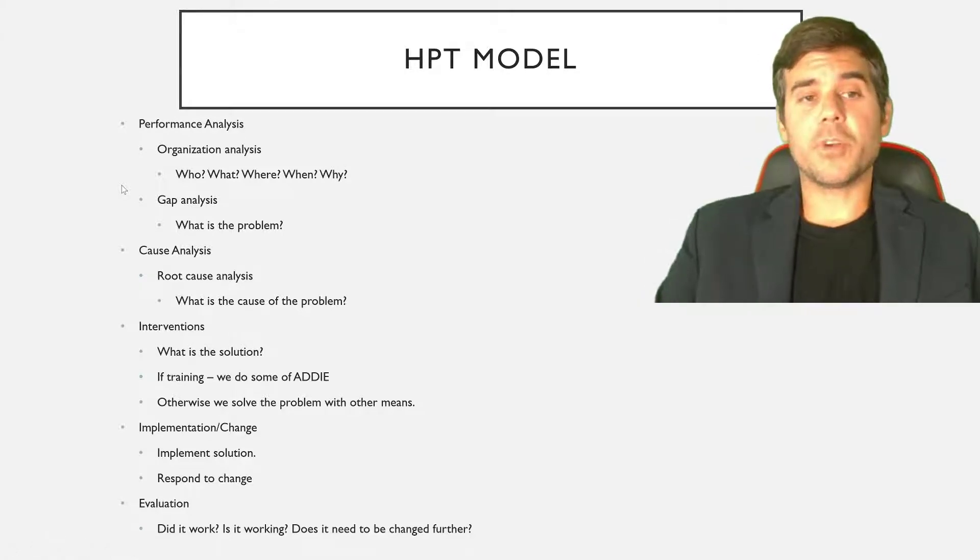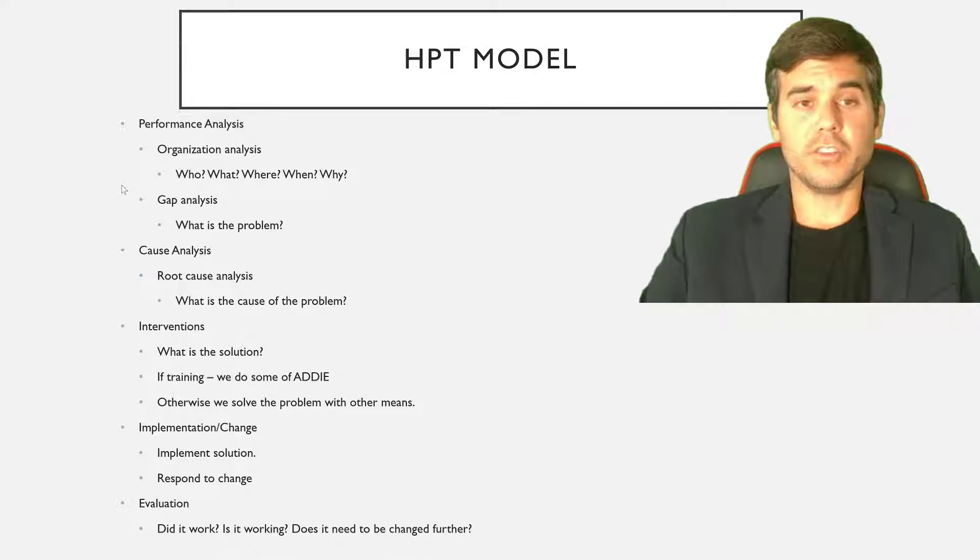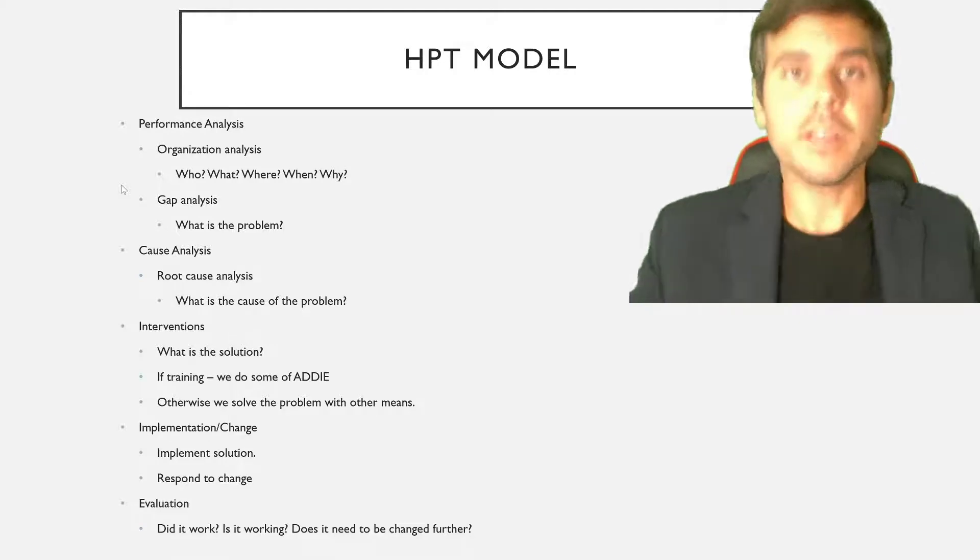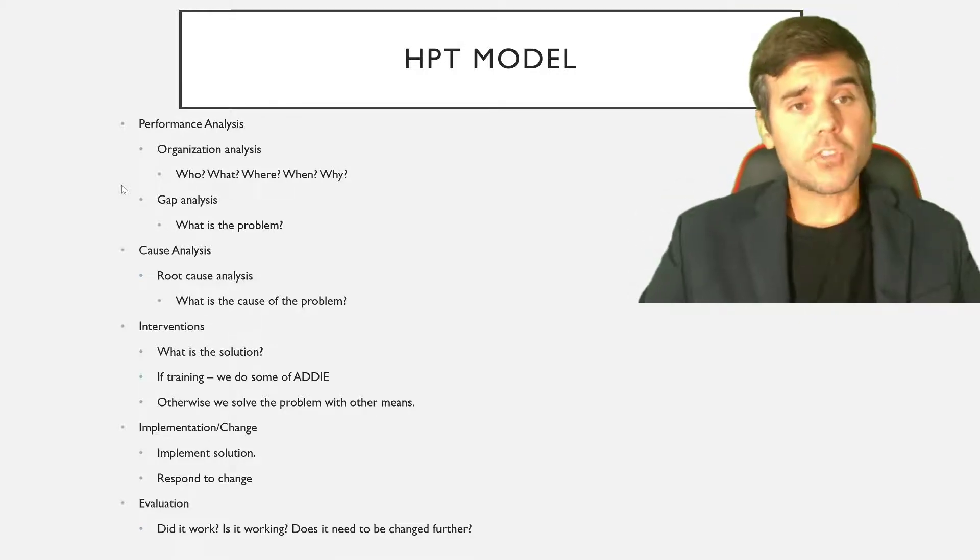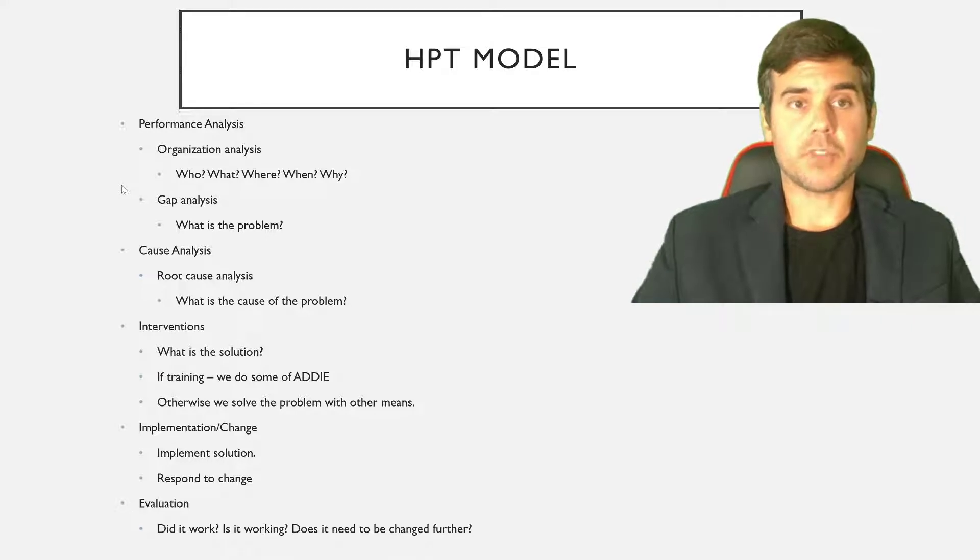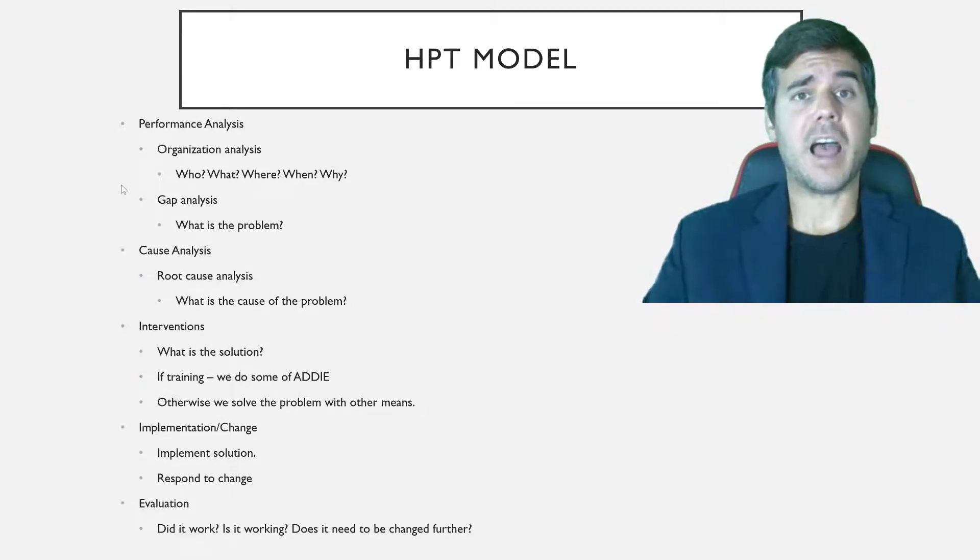So the first thing we do in this performance analysis, I said there were really three main steps: figuring out the needs, which is really the performance analysis; coming up with solutions, the intervention; and then the implementation and evaluation. So in the performance analysis, how do we determine what that initial problem is? The way the HPT model has us break it down is in two categories. We really do our organizational analysis, which is the who, what, where, when, why. Who's the company? And there's tons of material on how to do an in-depth organizational analysis. I'm giving the high-level overview in this presentation, so I'm not giving the in-depth. But the organizational analysis is the who, what, where, when, and why. Who's the company? What is their problem? Who approached you for the problem?